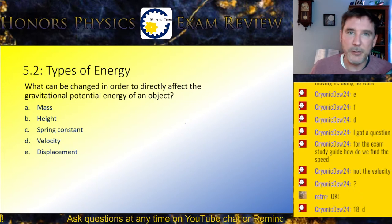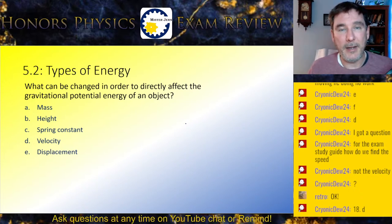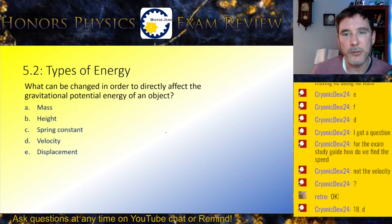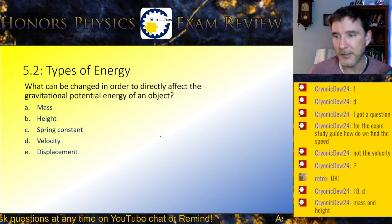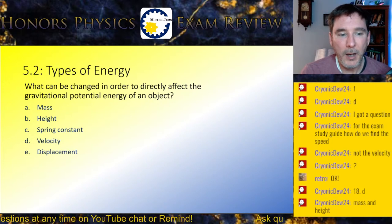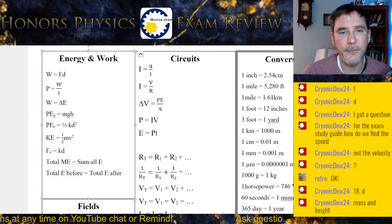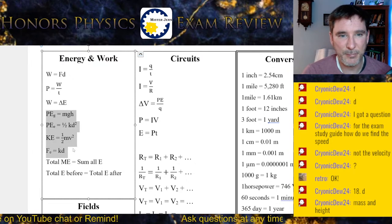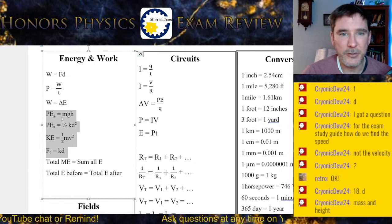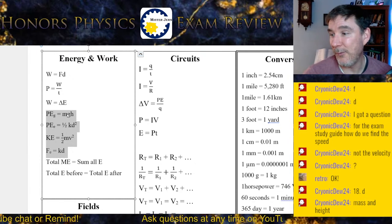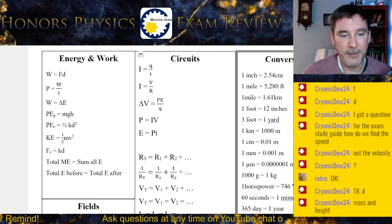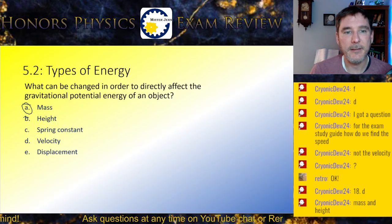Unit 5.2 — types of energy. What can be changed to directly affect the gravitational potential energy of an object? Looking at the equation: PEG equals mass times gravity times height. Gravity you can't change unless you move to another planet. So mass and height are your answers — A and B. Nice and straightforward.